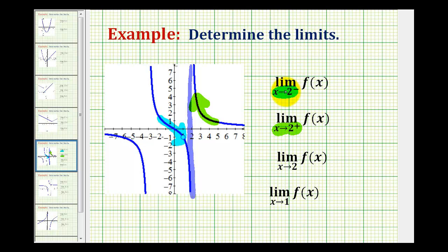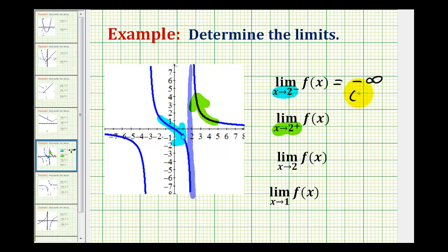For this first limit, the left-sided limit, notice as we get closer and closer to positive two, the function goes down without bound. When we talk about a function value, we're talking about a y value, and we can see these y values are going down forever. Therefore, they're approaching negative infinity, so this left-sided limit is equal to negative infinity, which does not exist.